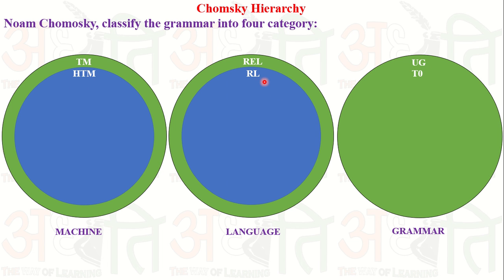This topic is already discussed in my previous video, so please watch all previous videos because each machine, language, and grammar has been discussed there. The halting Turing machine accepts the language known as recursive language. So Type 0 grammar contains two types of language — recursive language and recursively enumerable language — and two machines: Turing machine and halting Turing machine. These two machines and two languages are in the category of Type 0 grammar.